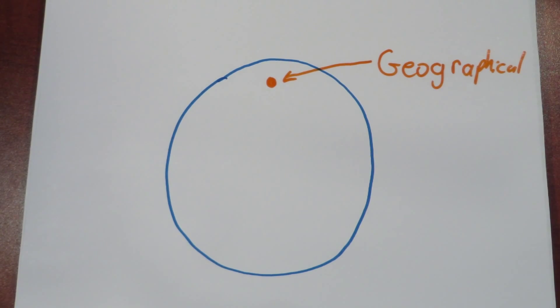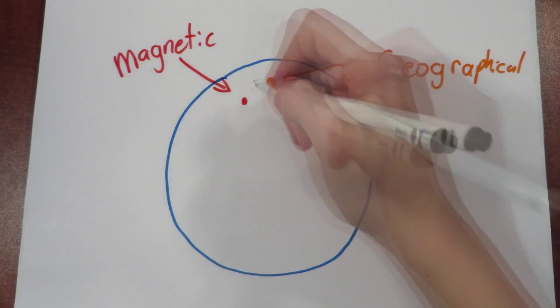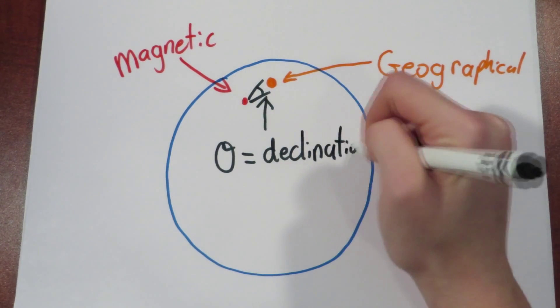And this is called the declination, which is due to local disturbances or even the altitude at which you're using the compass.